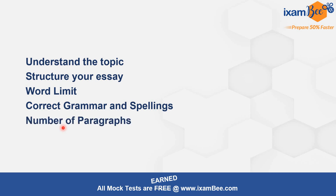Next, the number of paragraphs. Generally in NABARD we get a 300-word essay, for which 3 to 4 paragraphs suffice. But when we check papers, we see that students have written many paragraphs of just 2 to 3 lines each. That does not make any sense — it makes your essay look scattered and shows that your thoughts are not clear. So make sure the number of paragraphs is limited to 3 to 4 for a 300-word limit. If the word limit is around 450, you can stretch to a maximum of 5 paragraphs — not more than that.